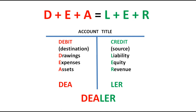So ang tatandaan natin is D-E-A equals L-E-R. Yung mga naka-red — ang DEA — eto yung may mga normal balances na debit. Ano yung mga yun? We have drawings, expenses, and assets. Ang normal balance nila ay debit. Para madaling tandaan: D — debit. D is drawings, expenses, and assets. Their normal balance is debit.